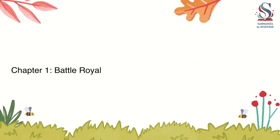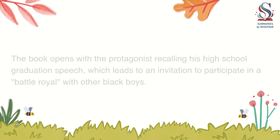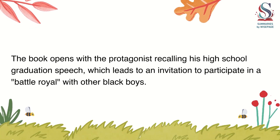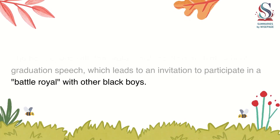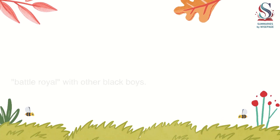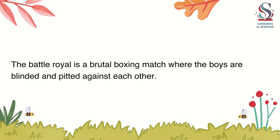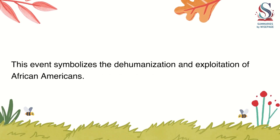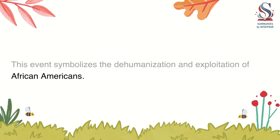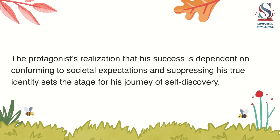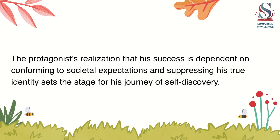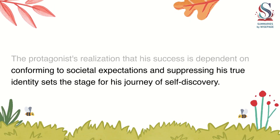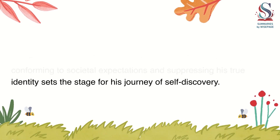Chapter 1: Battle Royal. The book opens with the protagonist recalling his high school graduation speech, which leads to an invitation to participate in a battle royal with other black boys. The battle royal is a brutal boxing match where the boys are blinded and pitted against each other. This event symbolizes the dehumanization and exploitation of African-Americans. The protagonist's realization that his success is dependent on conforming to societal expectations and suppressing his true identity sets the stage for his journey of self-discovery.